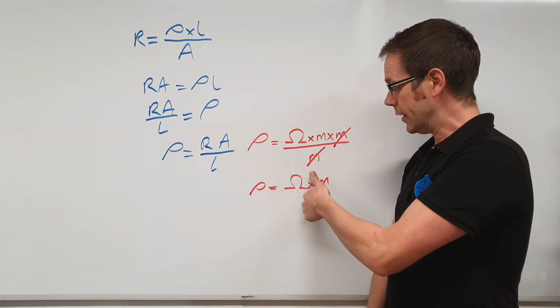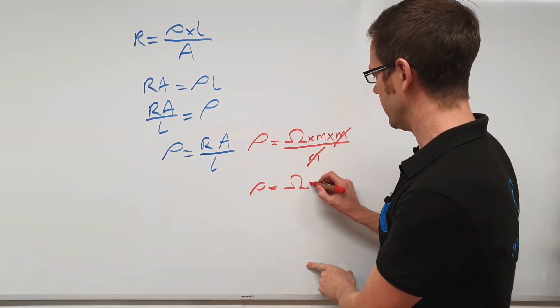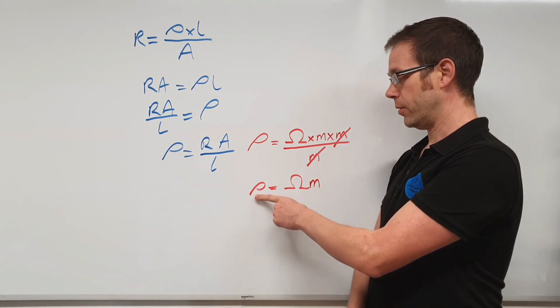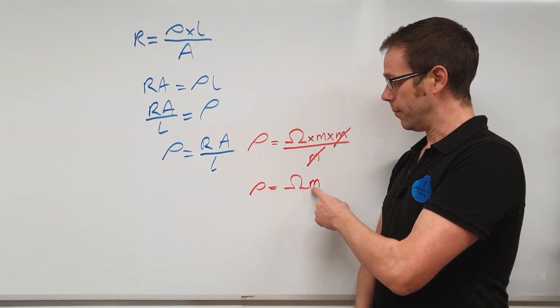And in algebra, you can ignore the multiplication symbol and just put ohms times meters like that. And that is the reason why the symbol, the unit symbol, or the unit rather, that we measure resistivity in is the ohm meter.